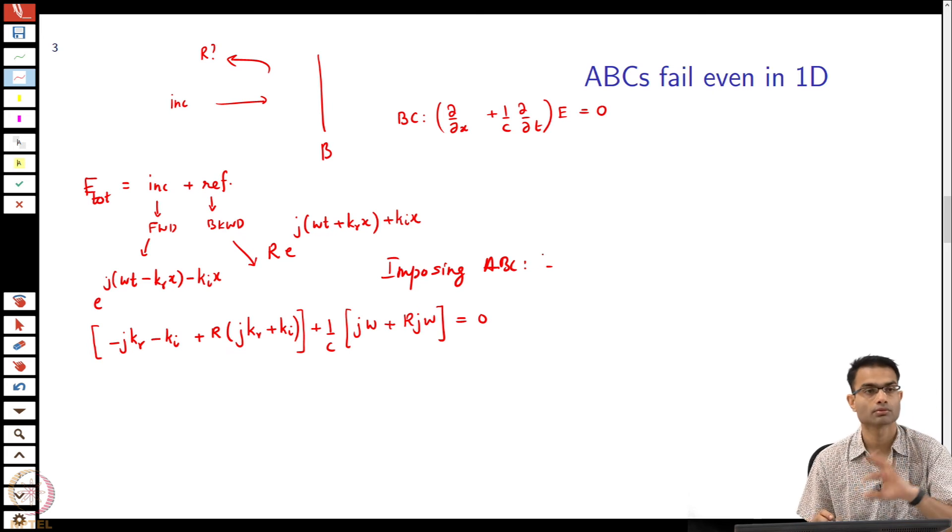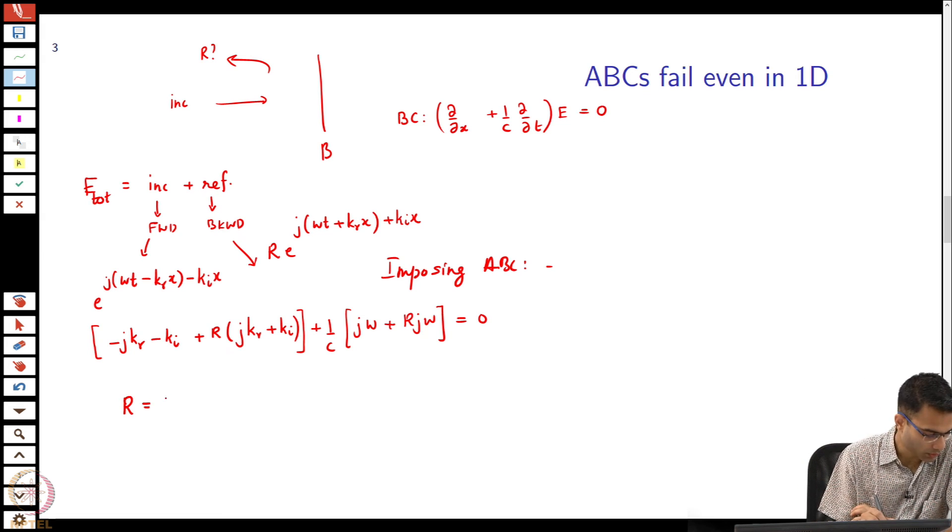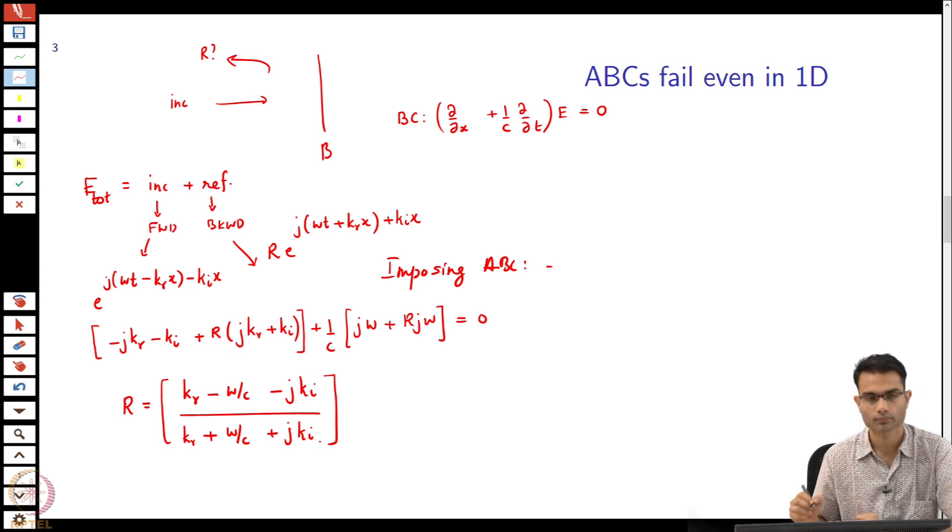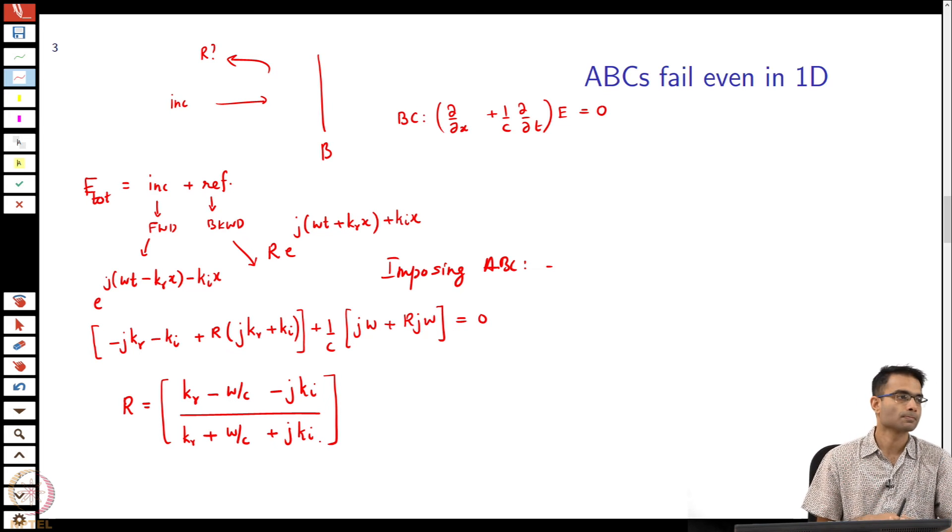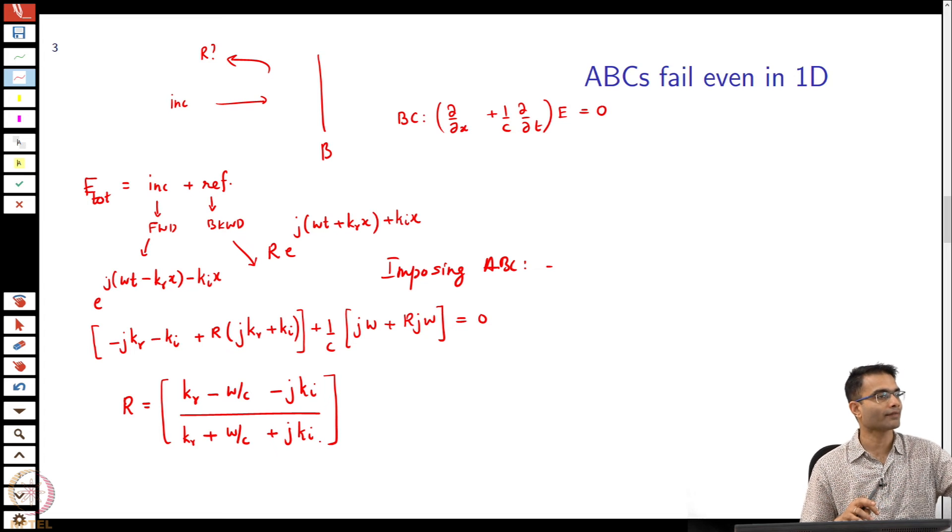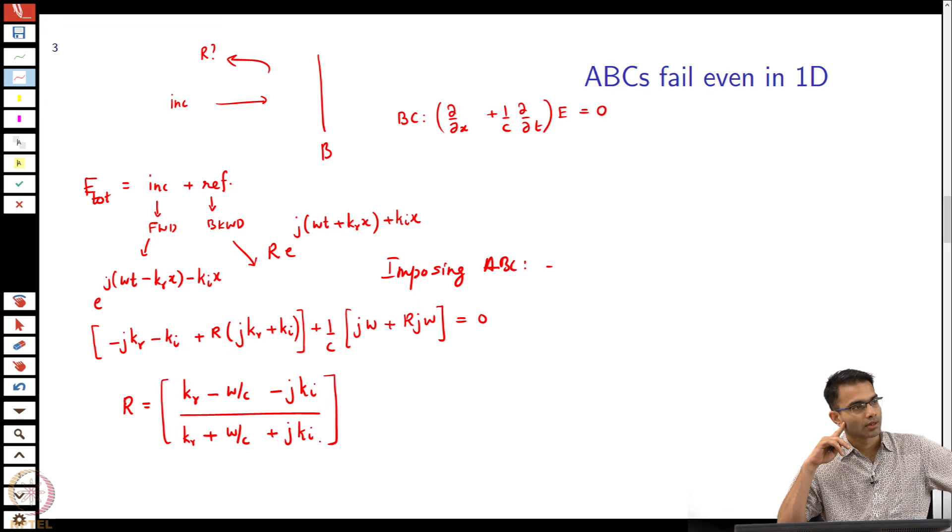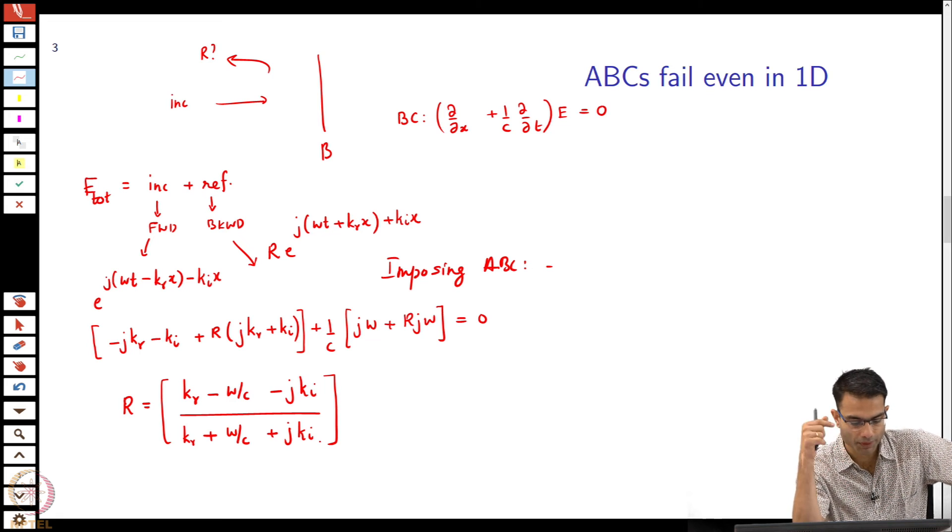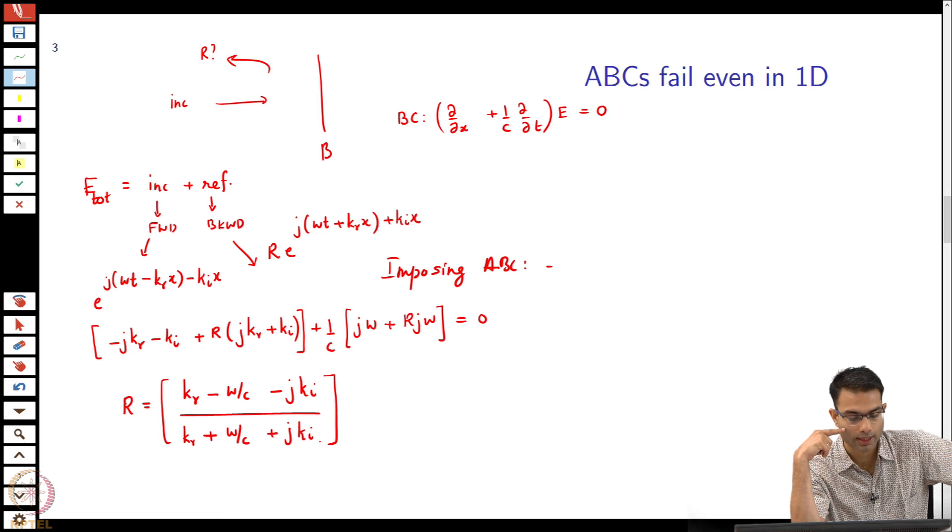From this, all we can do is put all the Rs on one side and write an expression for the reflection coefficient. What I get is R equals (k_r minus omega by c plus j k_i) divided by (k_r plus omega by c plus j k_i). What does that tell you? In our ABC what is the one knob we have in our hand to impose the boundary condition? In the 1D ABC or 2D ABC we are putting a cos theta factor over the 1 by c. In some sense you can play around with that number c, you can multiply by some cos theta or whatever. But now when you look at this expression, what happens?